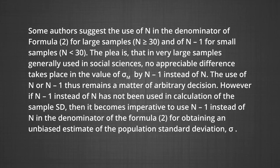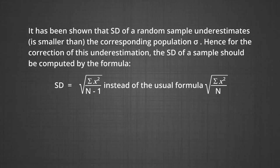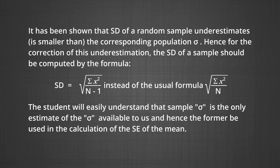However, if n minus 1 has not been used in the calculation of the sample SD, then it becomes imperative to use n minus 1 instead of n in the denominator of the formula for obtaining an unbiased estimate of the population standard deviation. It has been shown that the SD of a random sample underestimates the corresponding population sigma. Hence, for correction of this underestimation, the SD of a sample should be computed by the formula: SD equals the square root of (sum of x-squared divided by n minus 1), instead of the usual formula with n. The sample sigma is the only estimate of the population sigma available to us and is used in the calculation of SE of the mean.